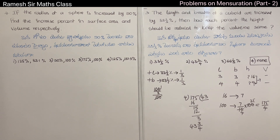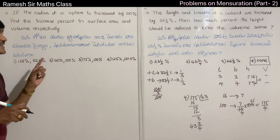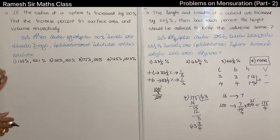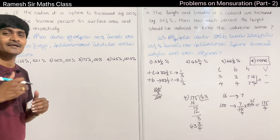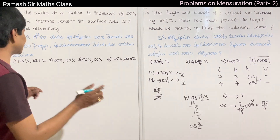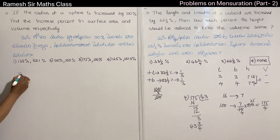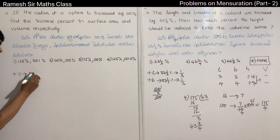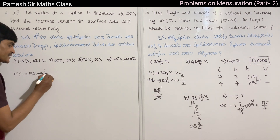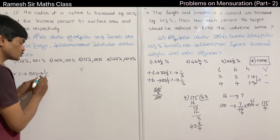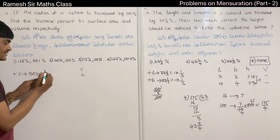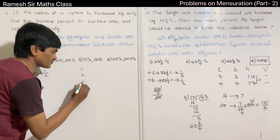Problem 4: If the radius of a sphere is increased by 50%, find the increase percent in the surface area and volume respectively. 50% as a fraction is 1/2. So if the original radius is 2 units, it increases by 1, giving a new radius of 3 units.